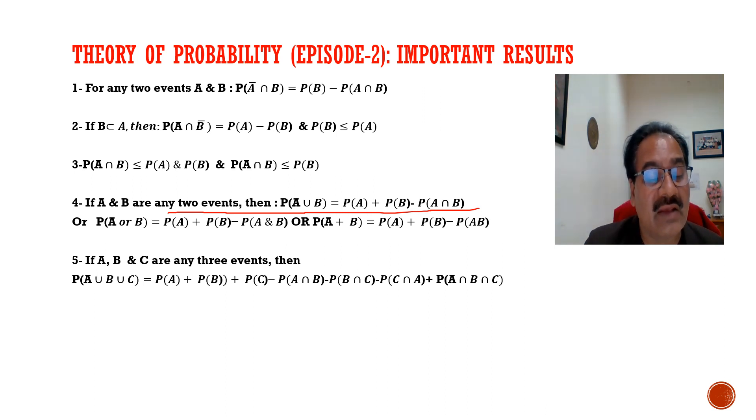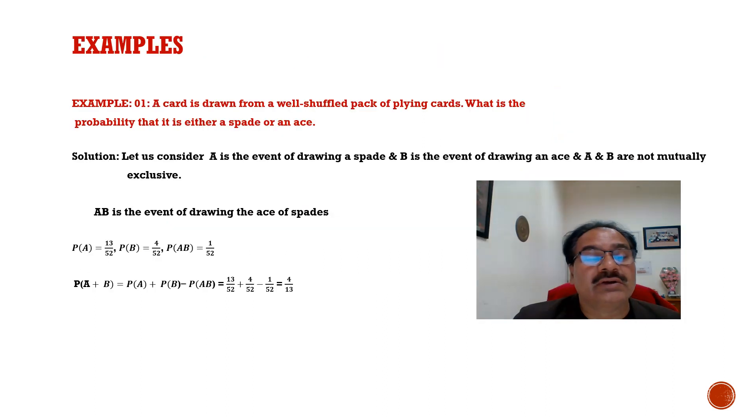If A, B, and C are any three events, then P of A union B union C is equal to P of A plus P of B plus P of C minus P of A intersection B minus P of B intersection C minus P of C intersection A plus P of A intersection B intersection C. Please remember these important results for probability. These are the basic results.